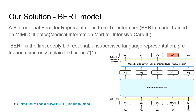Our solution is a BERT model — Bidirectional Encoder Representations from Transformers, developed by Google — trained on the MIMIC-3 notes. BERT analyzes text from both sides of a sentence, from the beginning and from the end, to understand embedded words in context. This context-awareness is innovative compared to previous approaches such as Word2Vec.